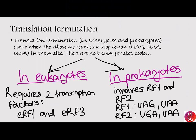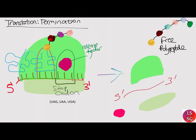The last step is translation termination. Termination occurs when a stop codon — UAG, UAA, or UGA — is encountered on the messenger RNA. Upon aligning with the A-site, these stop codons are recognized by protein release factors that resemble transfer RNAs. The release factors differ in eukaryotes and prokaryotes, but in both cases they instruct the peptidyl transferase enzyme to add a water molecule to the carboxyl end of the P-site amino acid. This forces the P-site amino acid to detach from its transfer RNA, and the newly formed polypeptide chain is released from the complex.